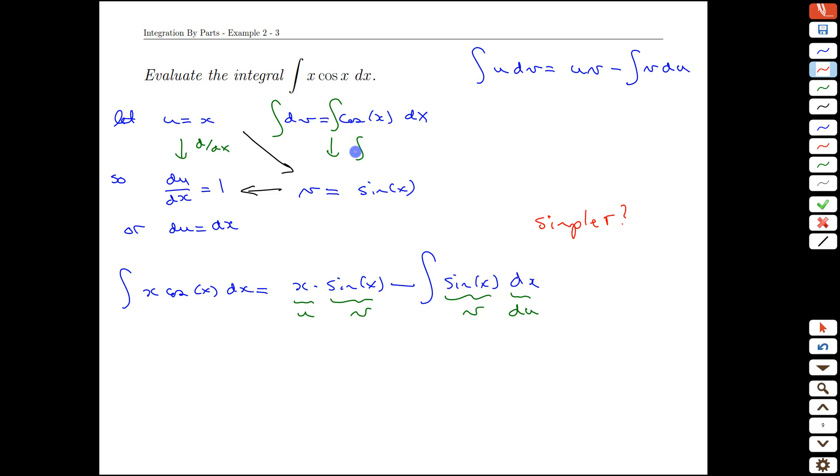And then we ask ourselves whether we've created a simpler integral. Along the way, we also noted that we could integrate the dv part. There was no trouble there. So now the next step of evaluation is, is this a simpler integral? Absolutely. The integral of sine we know.